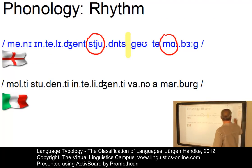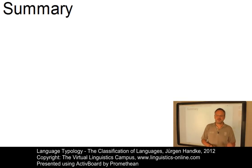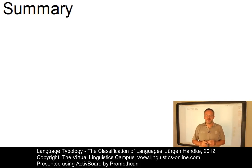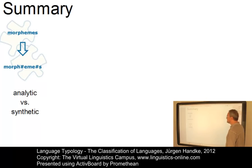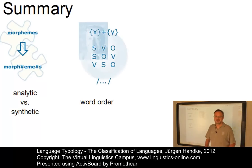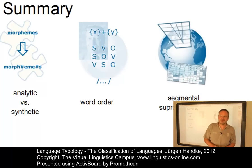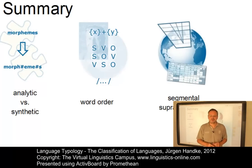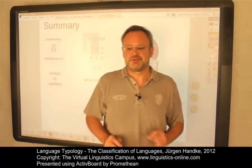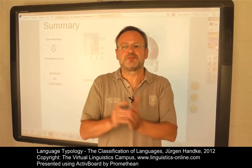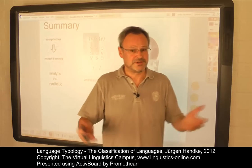Let us summarize. We have defined several parameters for the classification of languages. Morphologically, languages can be classified in terms of a continuum between analytic and synthetic. Syntactically, the basic word order — i.e. the order of the main functional elements in declarative sentences — constitutes the central parameter. In phonology, segmental as well as suprasegmental features — in particular tonal and rhythmical aspects — constitute the basis for a typological classification of the languages of the world. In addition to these central parameters, numerous specific parameters ranging from phonology to syntax and even beyond come in.